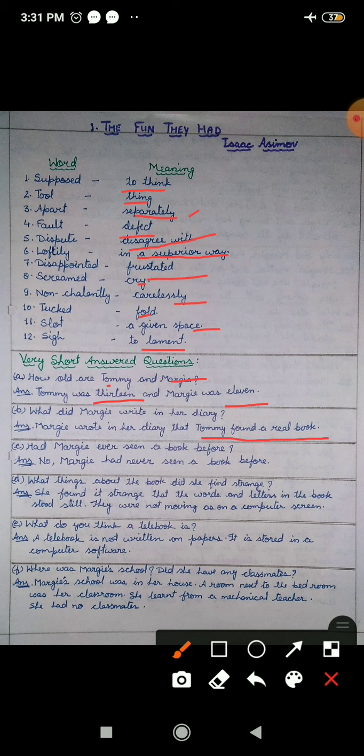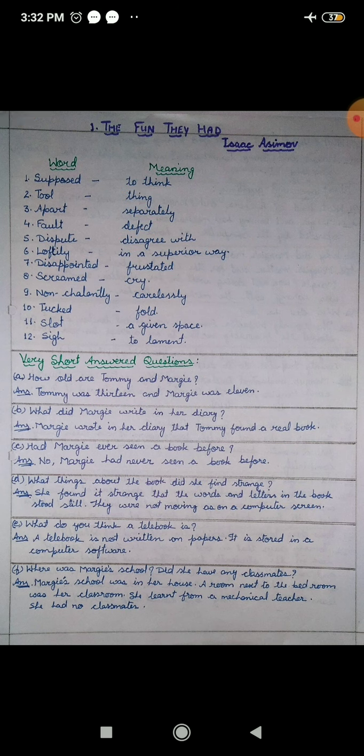Had Margie ever seen a book before? Kya Margie ne pahle kabhi koi book dekhi thi? No, Margie had not seen a book before. Nahi dekhi thi. What things about the book did she find strange? Usko book ke baare mein kya kuch ajeeb laga? She found it strange that the words and letters, ki uske oopar joh words or letters thae, wo stood still, wo bilkul hildol nahi rahetai, jayse ki kishi computer screen pere hilte hain. They were not moving as on a computer screen.